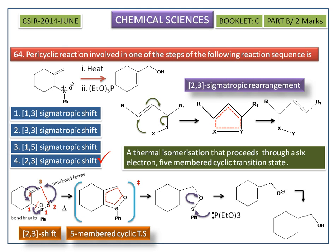So the pericyclic reaction involved in one of the steps of the following reaction sequence is the 2,3-sigmatropic shift. The correct answer is the fourth option: 2,3-sigmatropic shift.